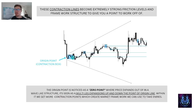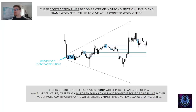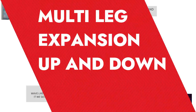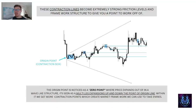The banks make money on every one of these swing highs and swing lows, but they keep coming back and gravitating around this point of origin. It is the zero point where price expands out in a wave-like structure — a multi-leg expansion up and down the point of origin. Within it we get more contraction points which create market framework, and we can use these to understand where we are positioned and where to find entries.